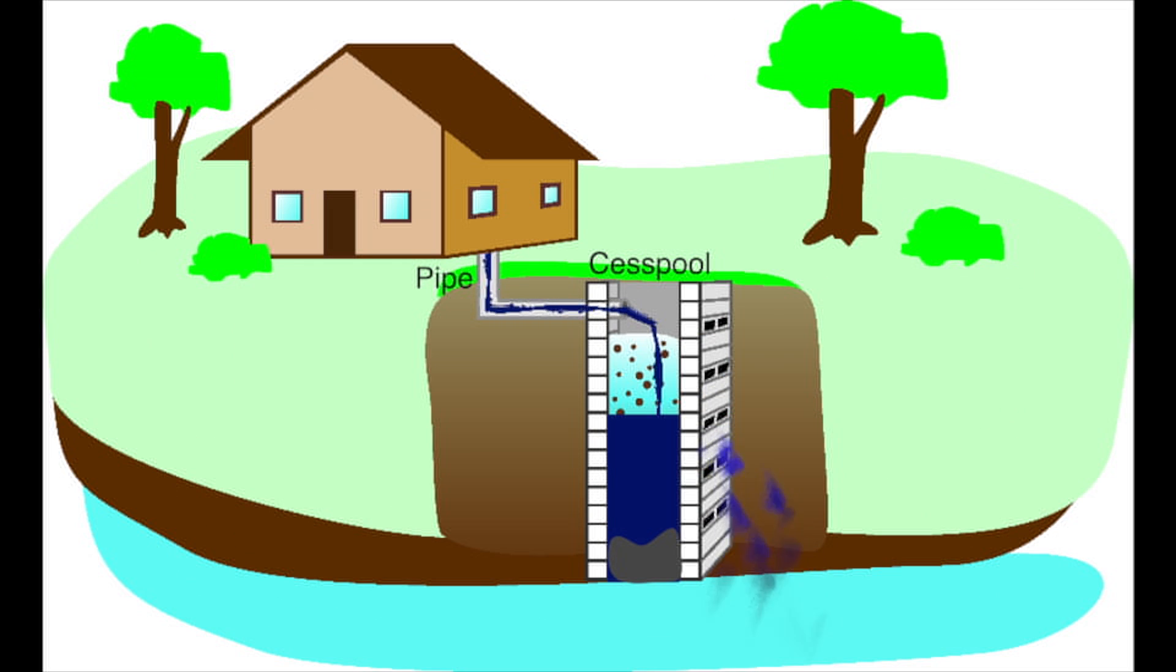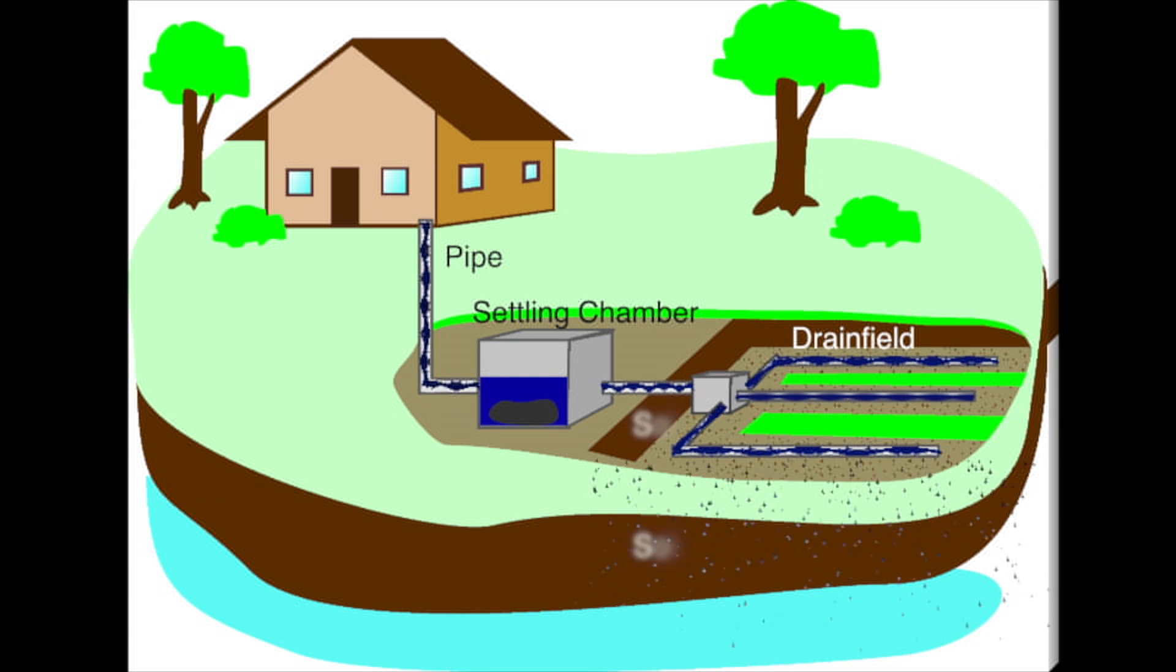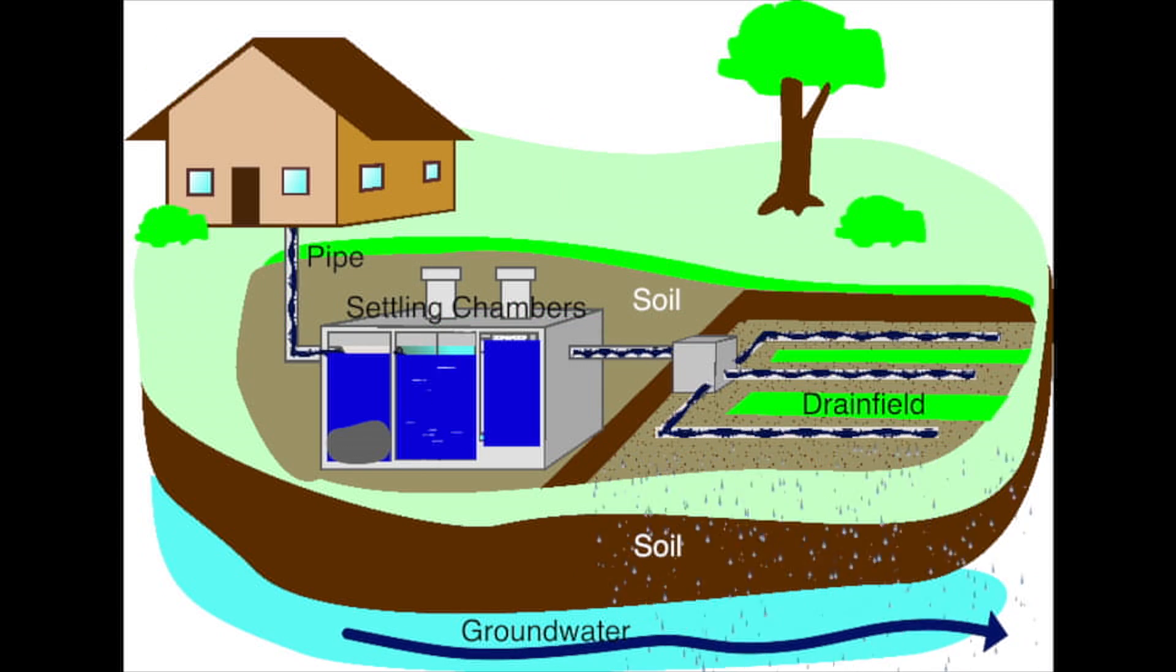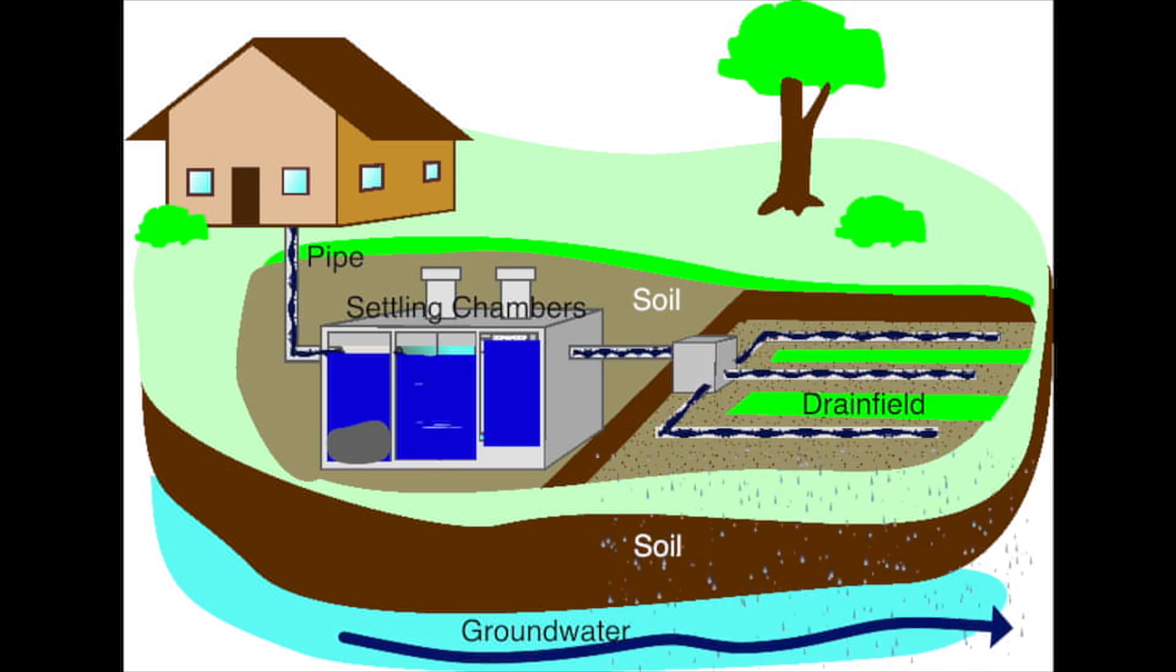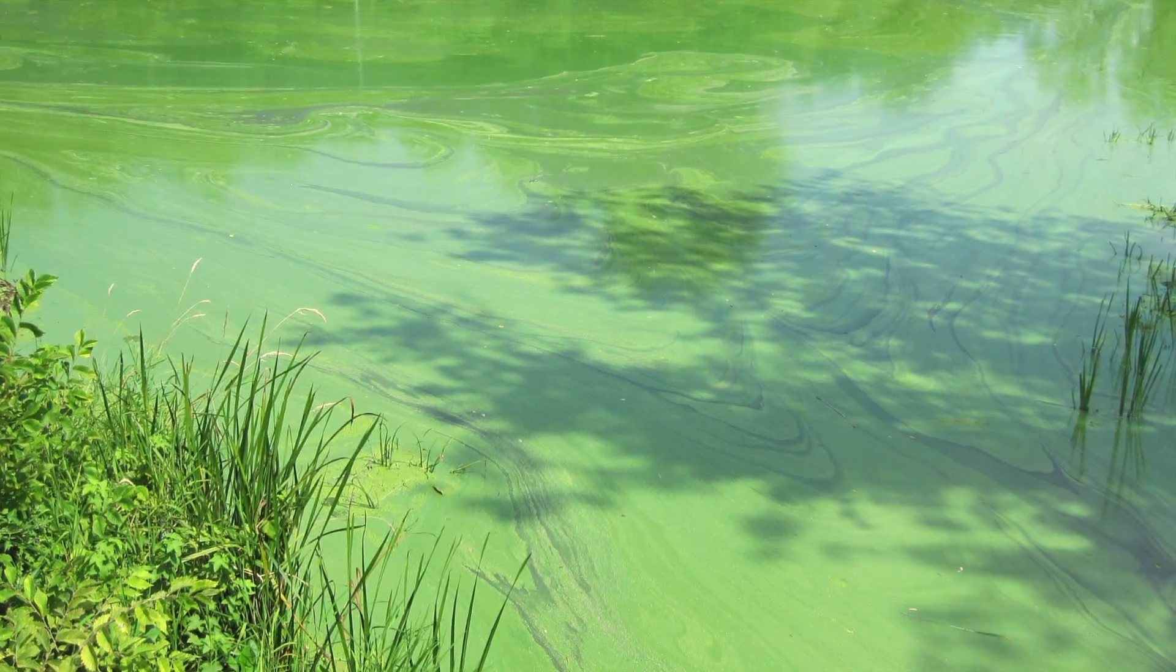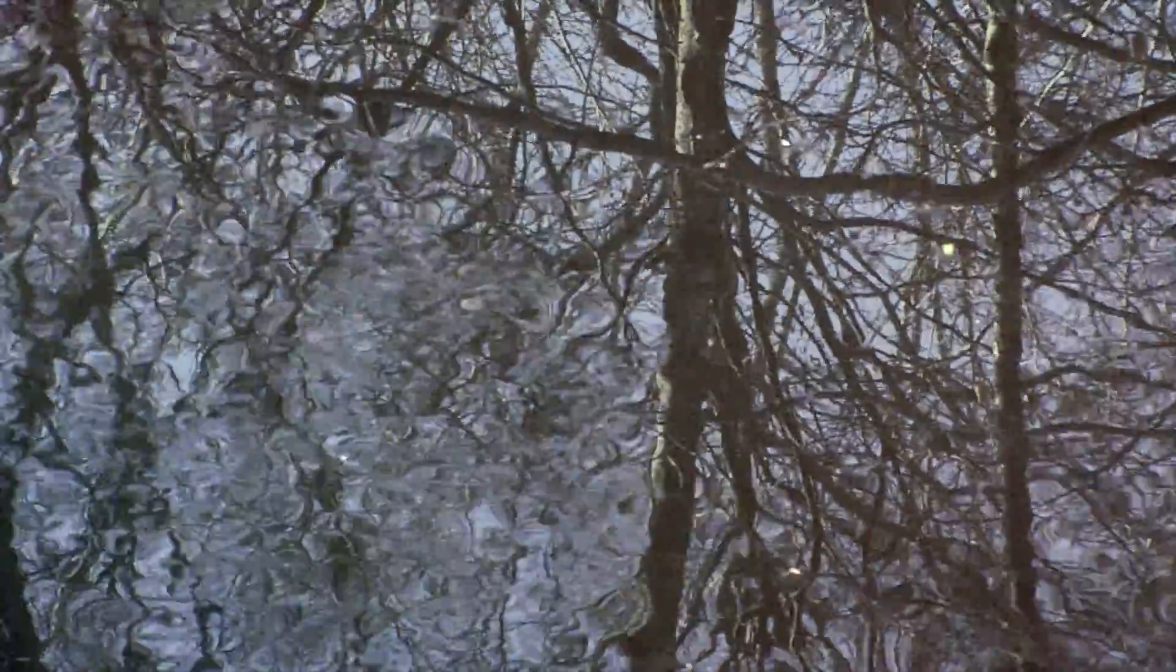With each of these septic systems, after wastewater leaves the drain field, it's slowly absorbed and further filtered naturally by the soil below. Systems that are closer to waterways are often above coarse soil containing sand and gravel, which makes it easier for wastewater to reach waterways before being properly filtered. Innovative and alternative systems are crucial in these areas to assist in the removal of nitrogen.